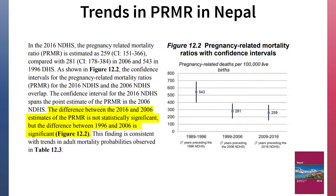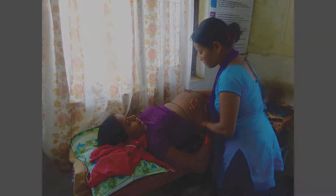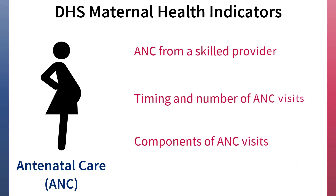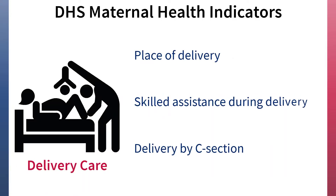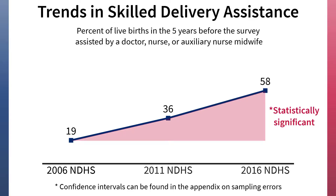DHS final reports generally include text in the chapter on Adult and Maternal Mortality about how to interpret trends in pregnancy-related mortality ratios and often include information about statistical significance. Though the decrease between the 2006 and 2016 Nepal DHS PRMR estimates is not statistically significant, DHS surveys include other indicators which can be more valuable for program managers and policymakers trying to determine whether recent progress is being made in maternal health. For example, quality antenatal care is essential to keeping women healthy during pregnancy and saving lives. Delivery assistance from a skilled provider improves childbirth outcomes and increases the odds of survival for both women and newborns. In Nepal, skilled assistance during delivery has increased from 19% of births in 2006 to 58% of births in 2016.